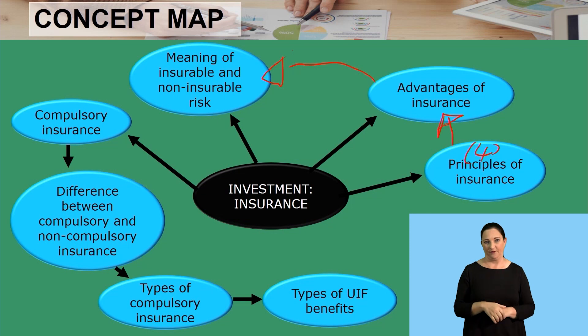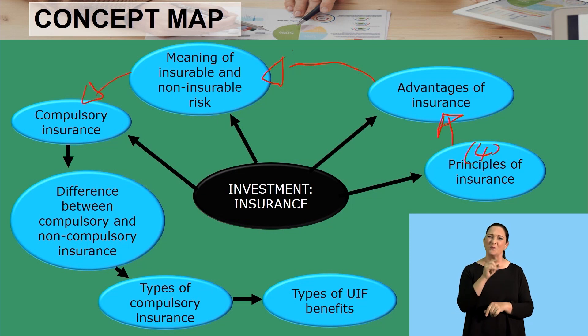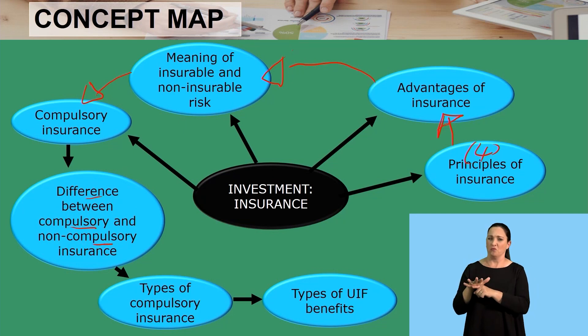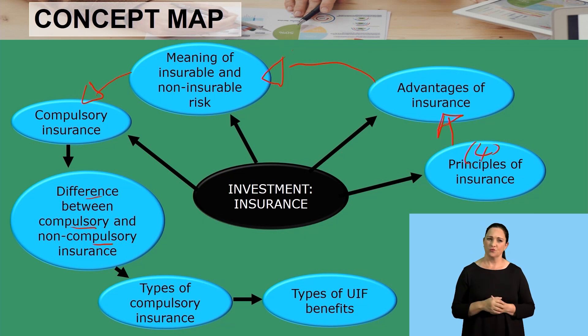We also looked into compulsory insurance — what do we mean by compulsory insurance? This is insurance that is required by law; it is a legal obligation for a business to have one because a business has workers who might need such insurance. We also looked at the differences between compulsory and non-compulsory insurance: non-compulsory is voluntary, meaning a business has a choice not to take one.